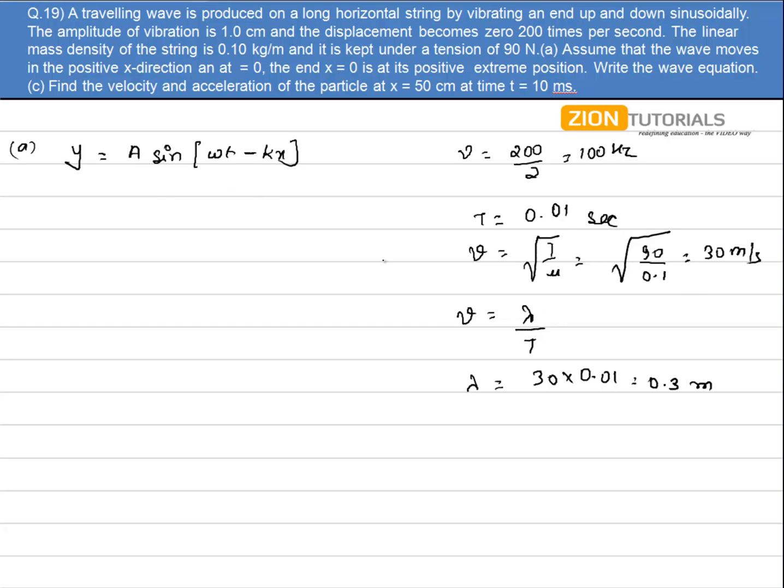Now I substitute all these values in the equation. I have y = 0.01 meters, that is the amplitude given in the question. Omega is 2π/T, that is 2π/0.01 × t minus 2π/λ, lambda is given as 0.3 into x. So this is my standard wave equation.